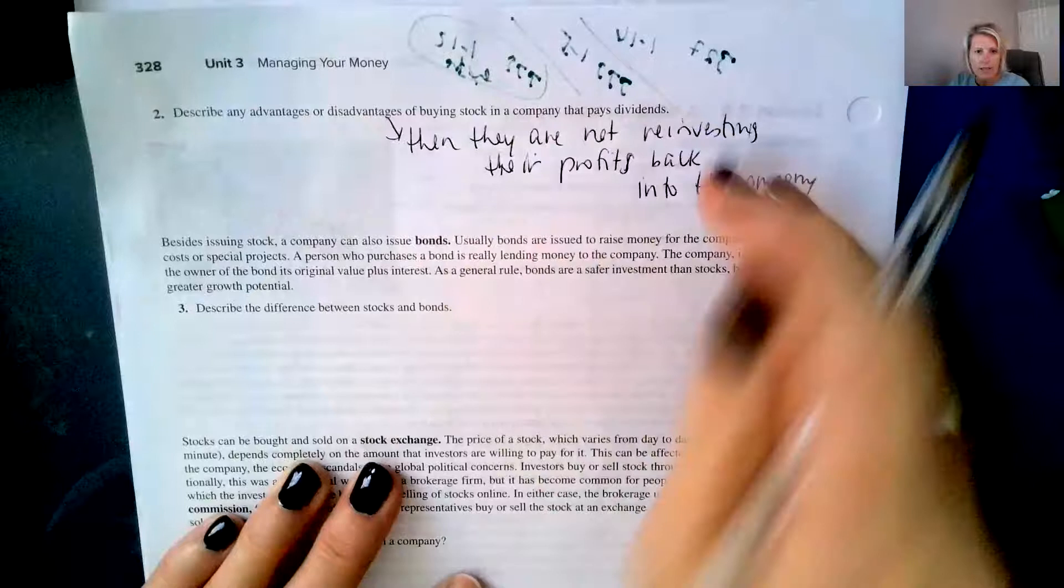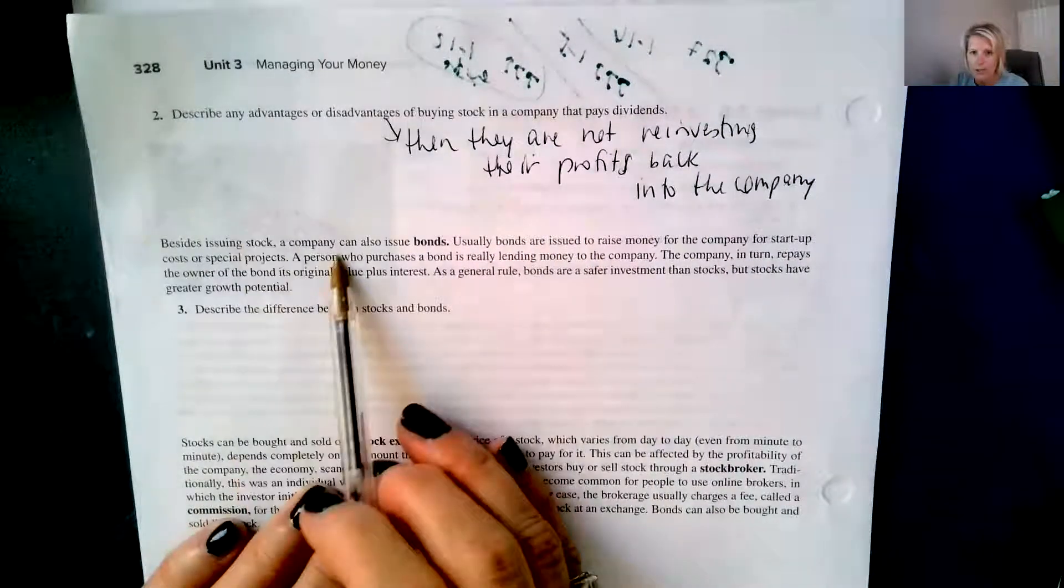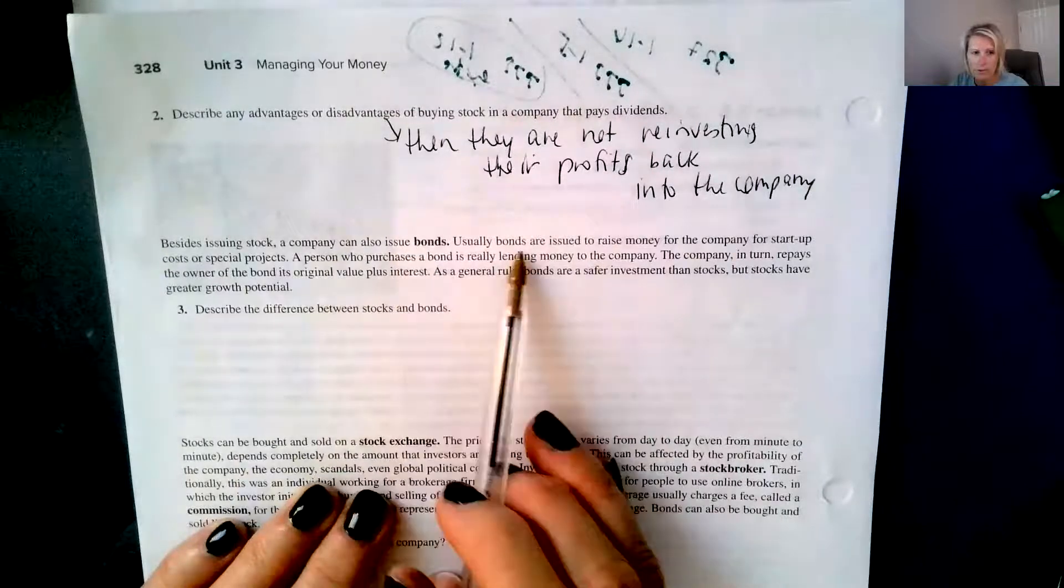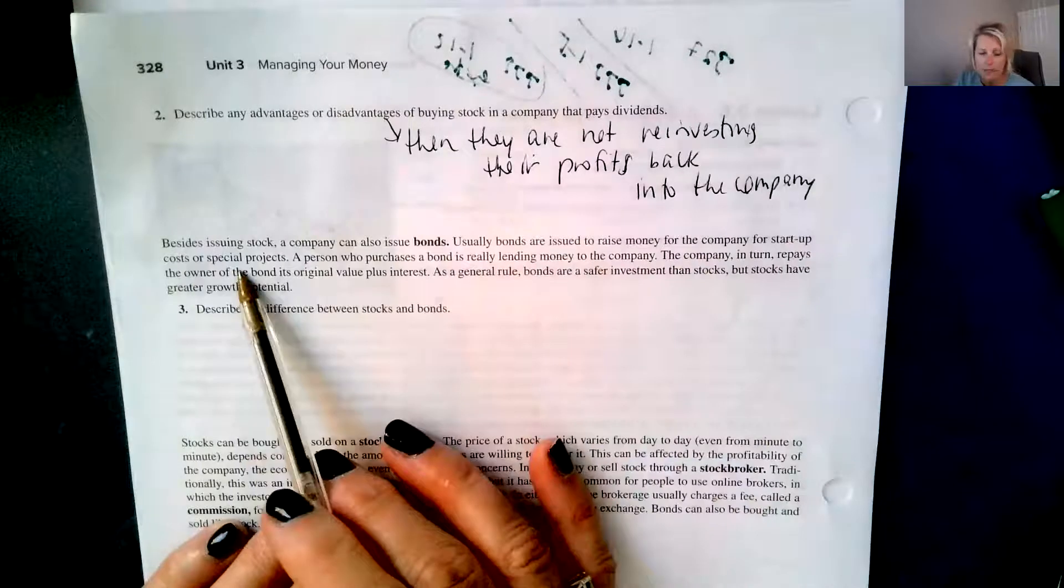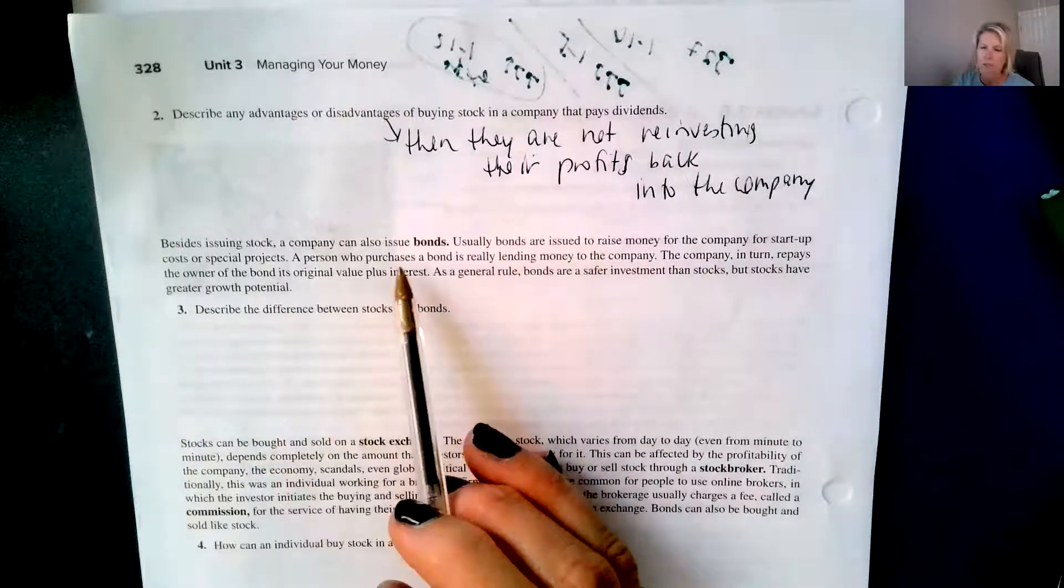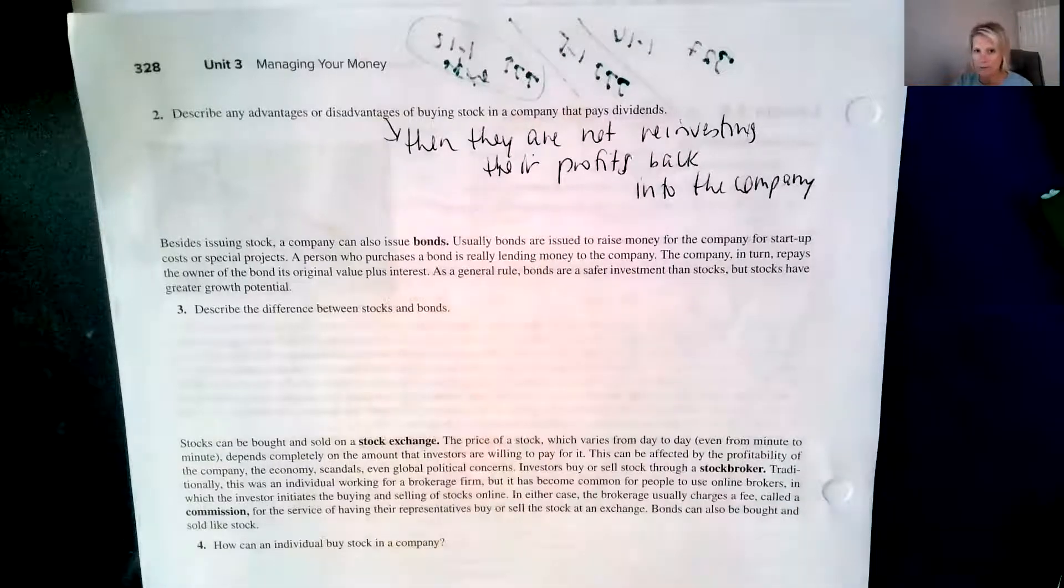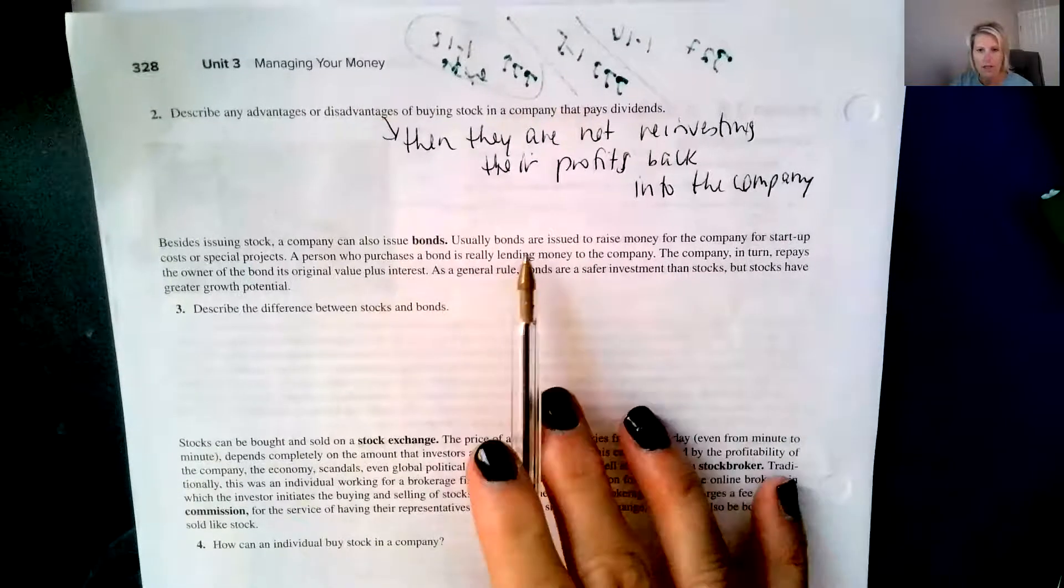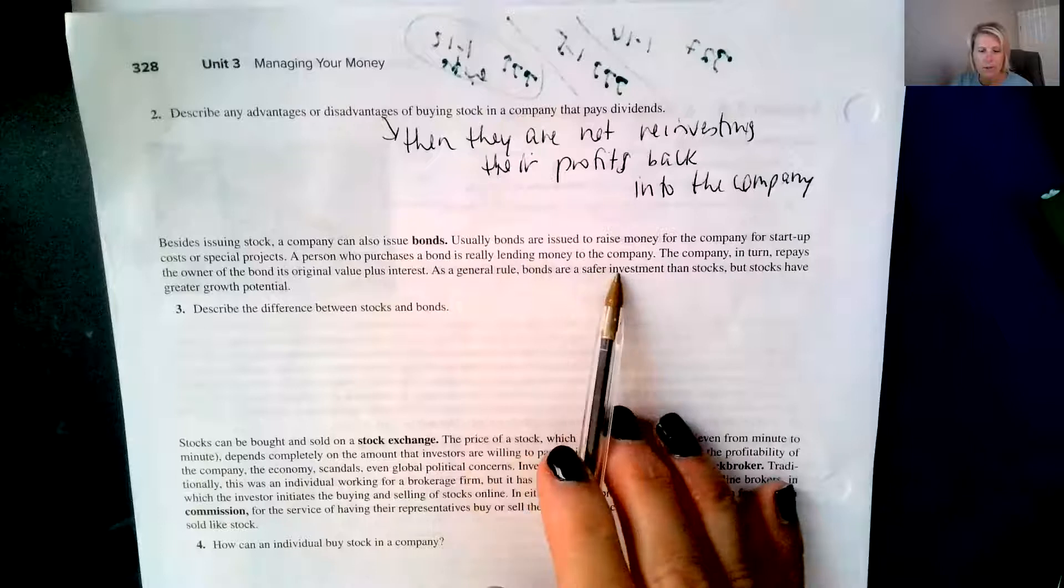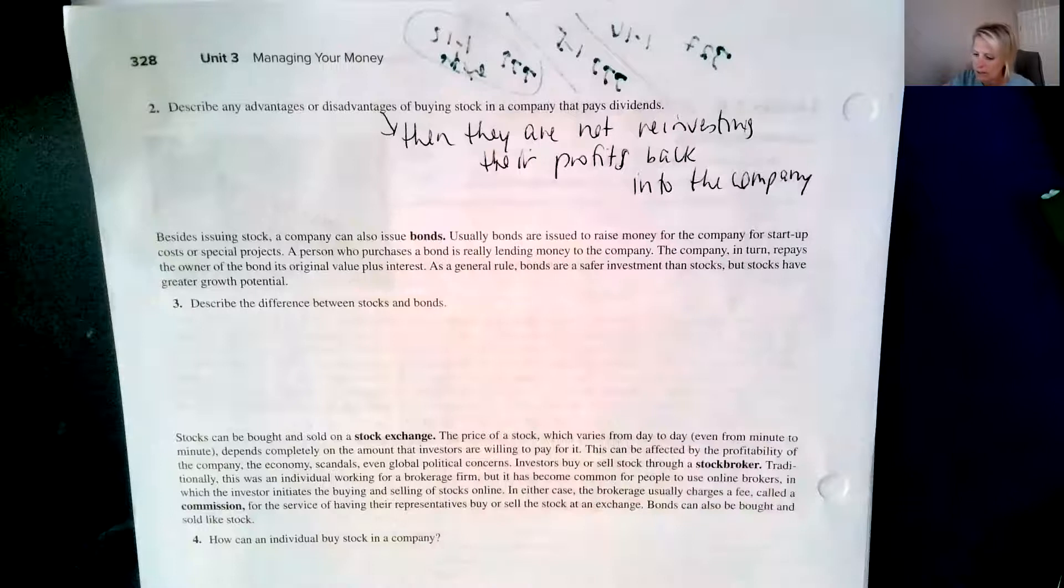Besides issuing stock, a company can also issue what's called bonds. Usually bonds are issued to raise money for the company for startup costs or special projects. A person who purchases a bond is really lending money to the company. That's why there's U.S. bonds, U.S. savings bonds. You're letting the government borrow your money. So if you buy a bond in a company, then you're letting the company borrow your money. The company in turn repays the owner of the bond its original value plus interest.